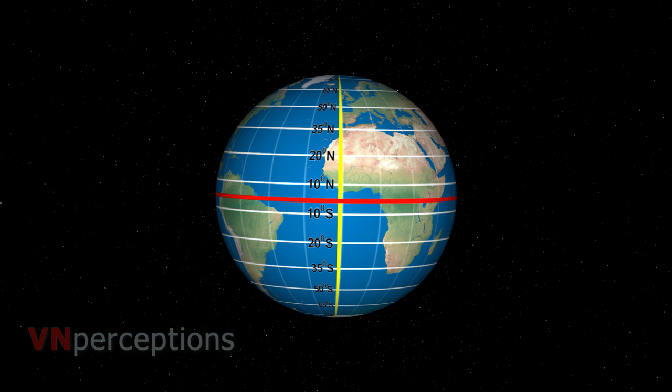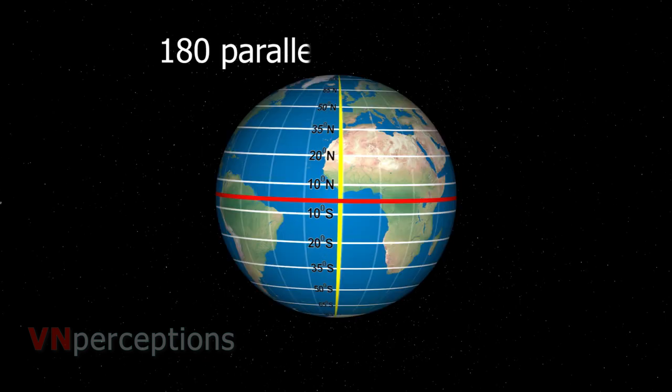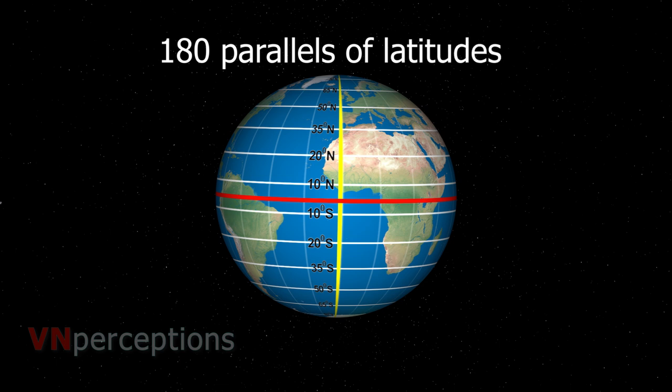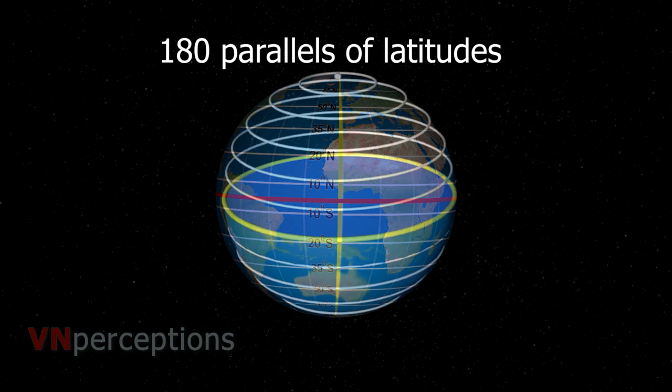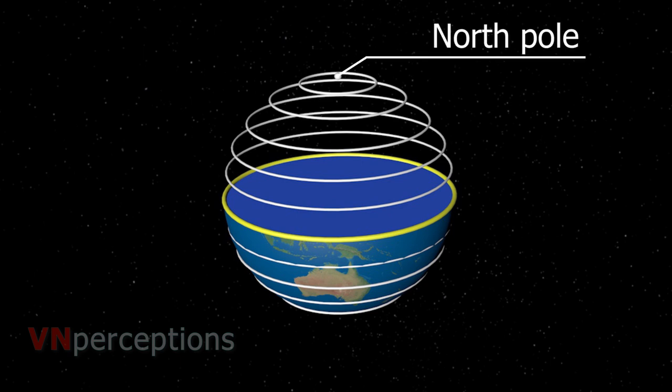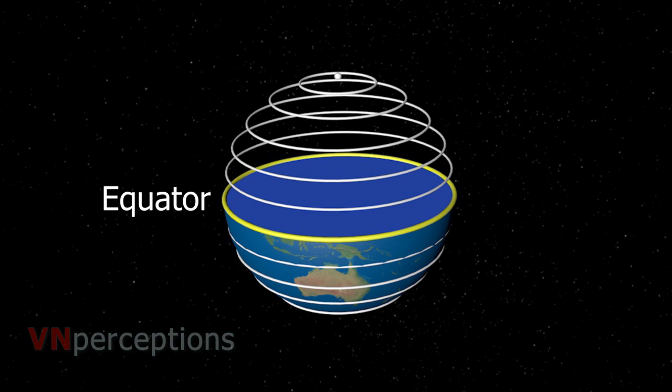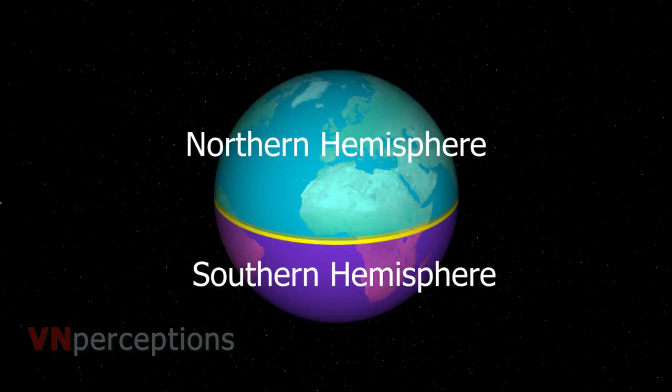What are the points to be noted? A latitude is an angular distance of a place north or south of the equator. There are 180 parallels of latitude. Each parallel of latitude is a circle. All the parallels of latitude are not of equal length. The circles become smaller as we move towards the pole. The equator at 0 degrees is the most important latitude and the largest circle that can be drawn on the globe.